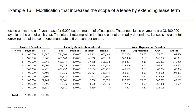We have a resulting payment schedule for $736,009. Note that this is an ordinary annuity, or a payment in arrears, so the first payment is discounted. If this was an annuity due, it would not be discounted. Then we have the liability amortization schedule, where the beginning balance will equal the present value of the future annual lease payments, as well as the asset depreciation schedule.